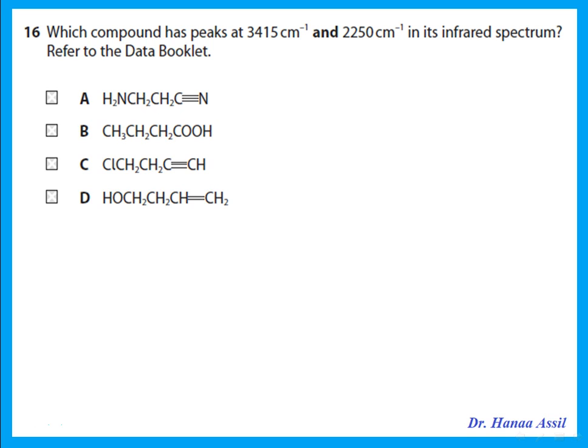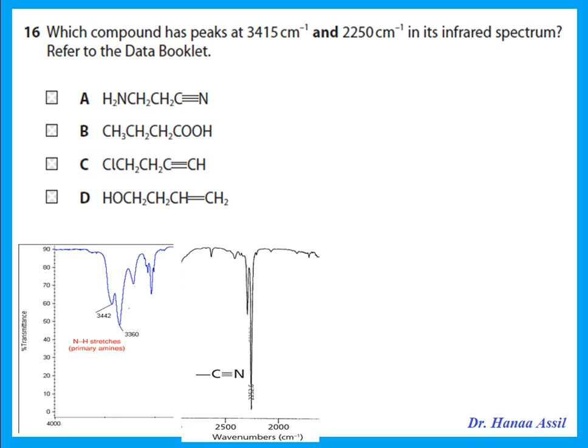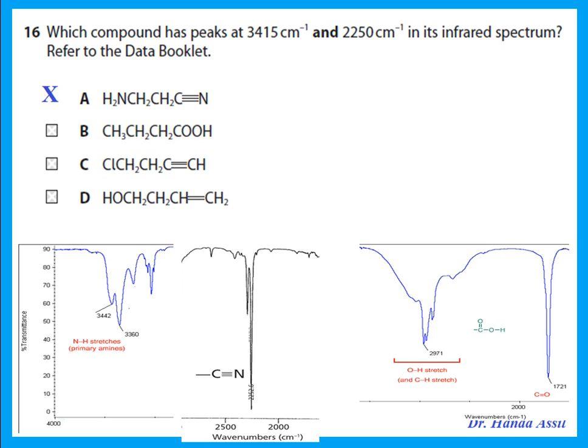Which compound has peaks at the given wavenumbers in its IR spectrum? Compound A has an amino group giving a peak around 3415 cm⁻¹, and a nitrile group giving a peak around 2250 cm⁻¹ — so A is the answer. The carboxylic acid gives a carbonyl around 1720 cm⁻¹ and an O-H around 2970 cm⁻¹. The alkynes and alkenes will not give peaks at those wavenumbers.